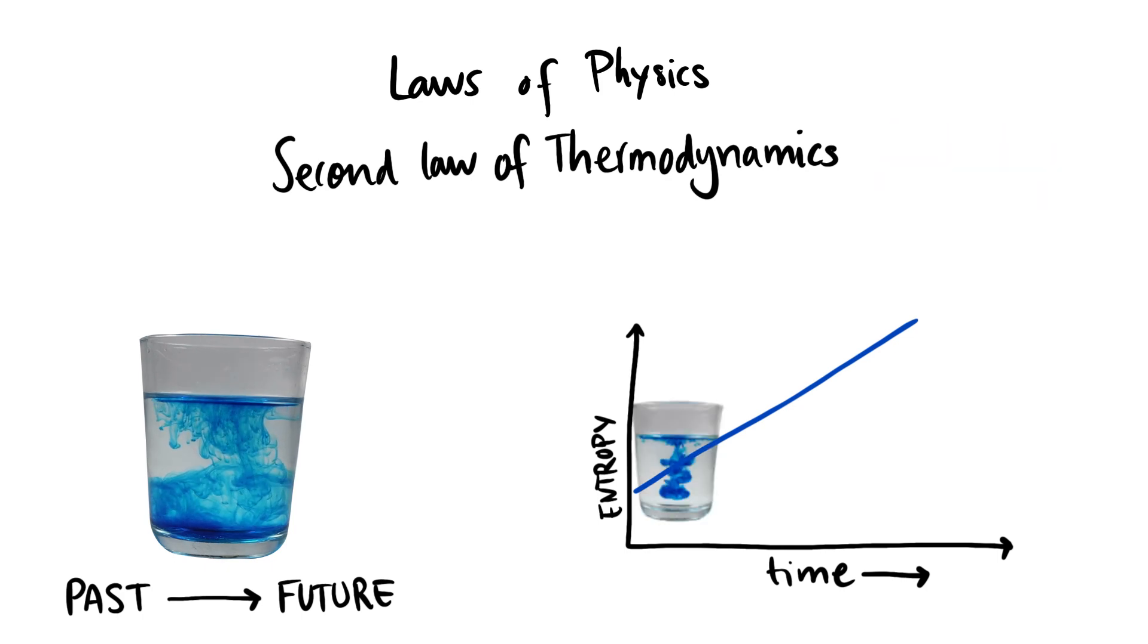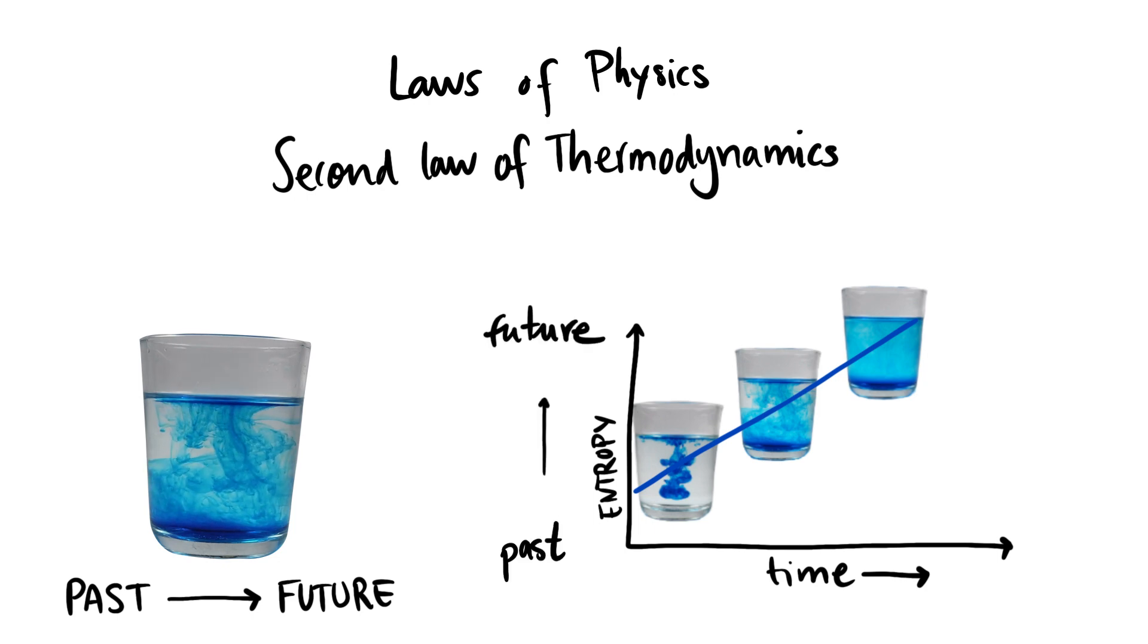Macroscopic processes ruled by thermodynamics happen in a preferred direction, towards higher entropy states. This preferred direction is what we call the future.